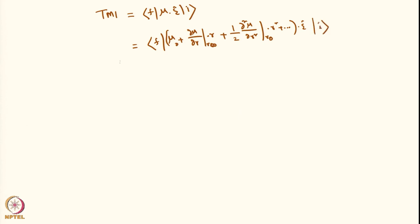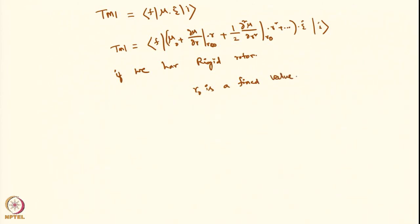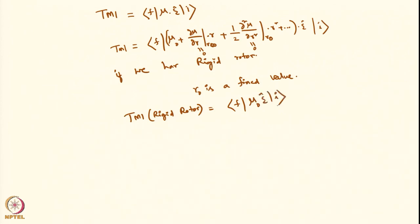For the rigid rotor TMI, since R0 is a fixed value, the derivatives with respect to r do not exist. Therefore all higher-order terms go to zero, and the TMI reduces to ⟨F|μ₀·ε|I⟩, where μ₀ is the permanent dipole moment.